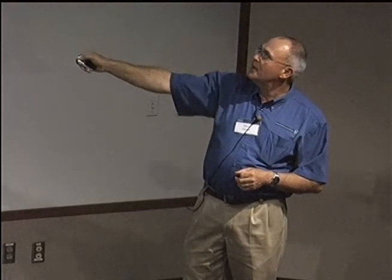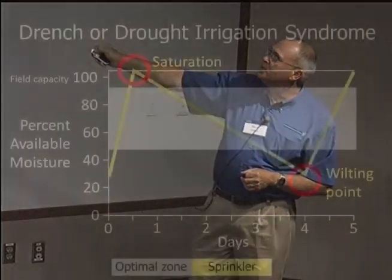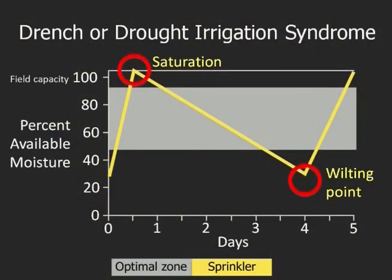What we didn't realize is that when it's saturated and at the wilting point, these are points of stress. When we do that continually, we reduce yield and affect the quality of the product we're growing. Sometimes we crack the fruit, sometimes we make it more susceptible to infection. We want to try to keep it right in this optimal zone.